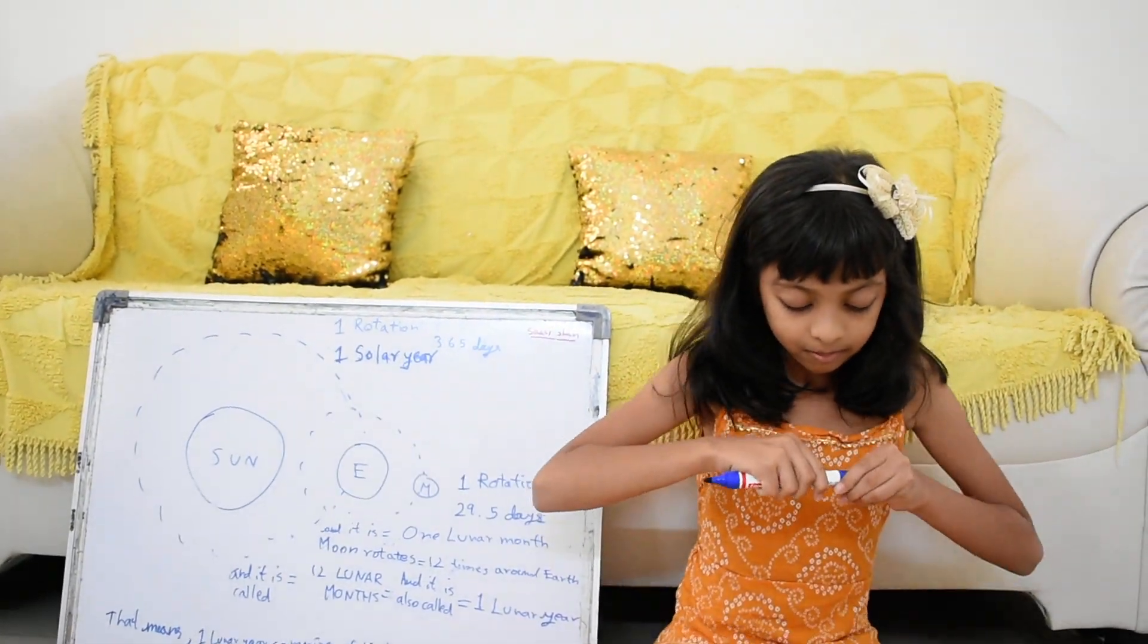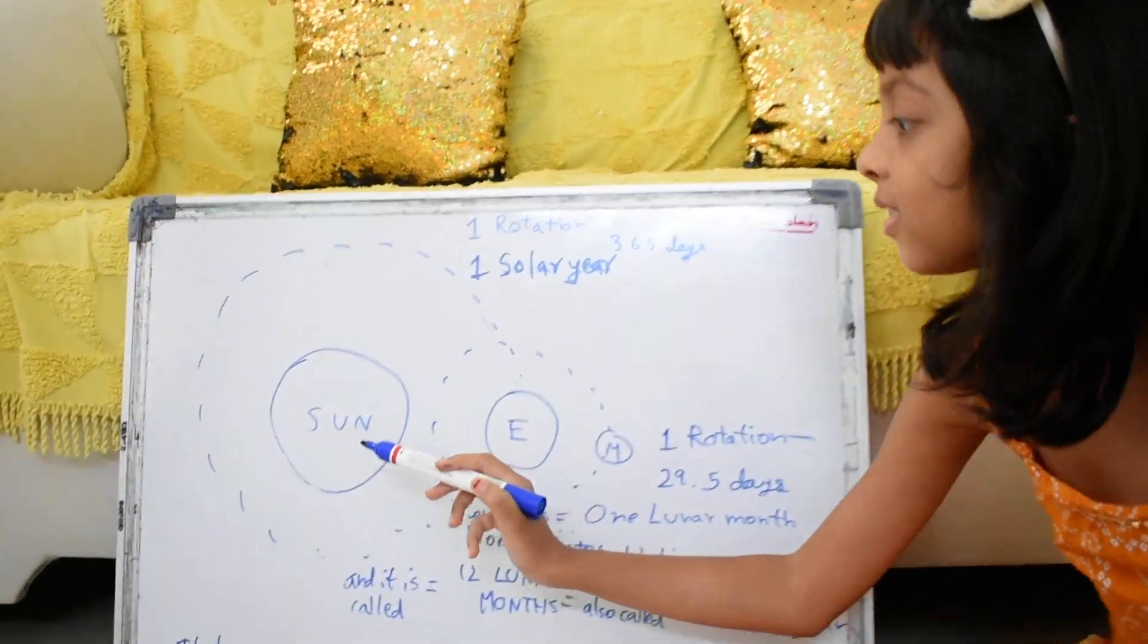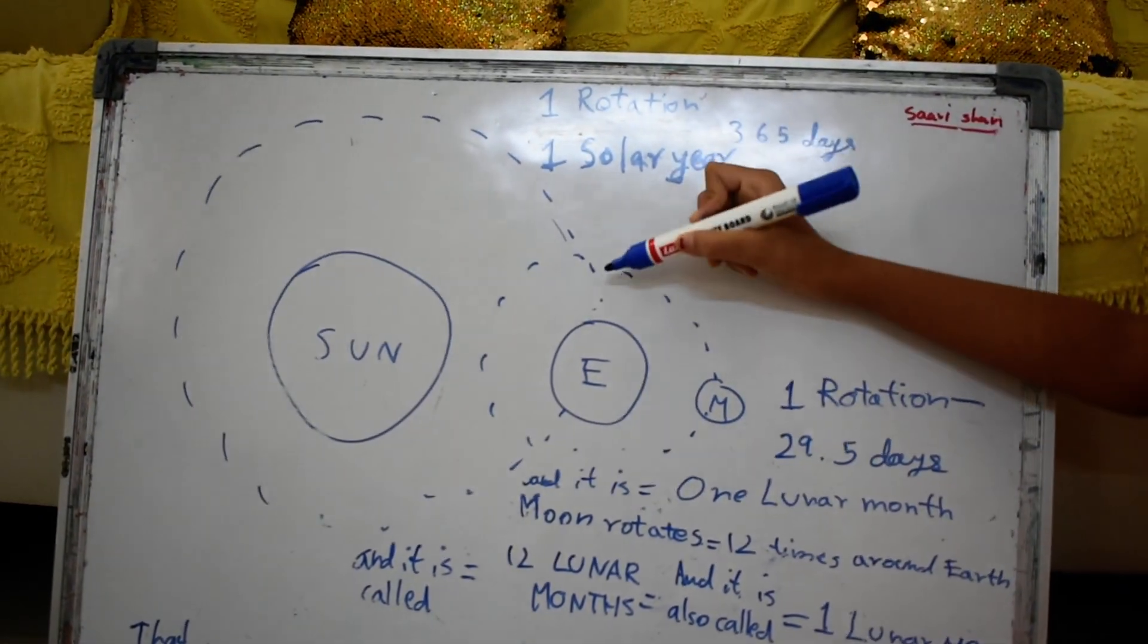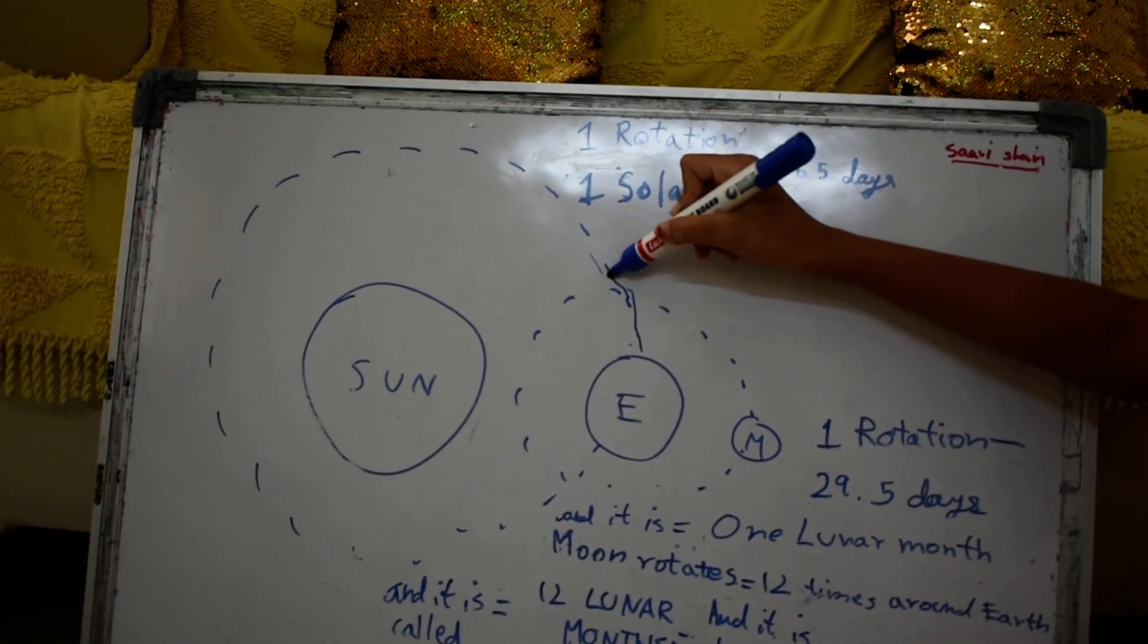For example, this is the sun and this is the earth. So the earth rotates around the sun.